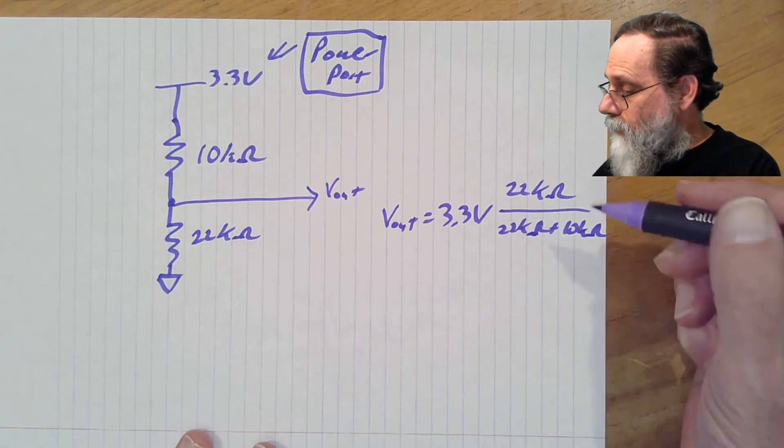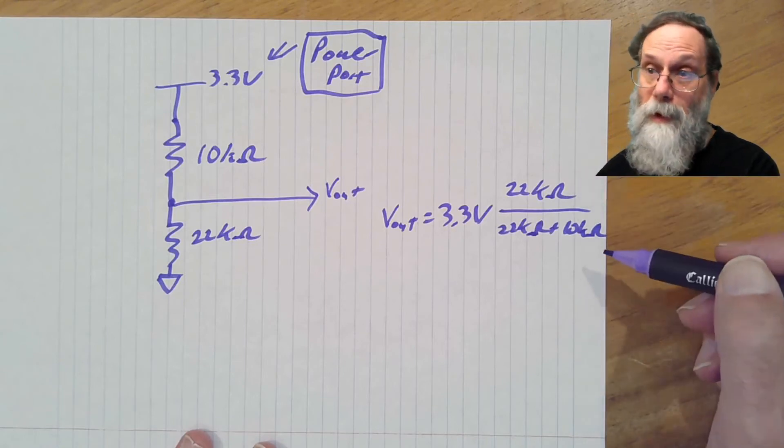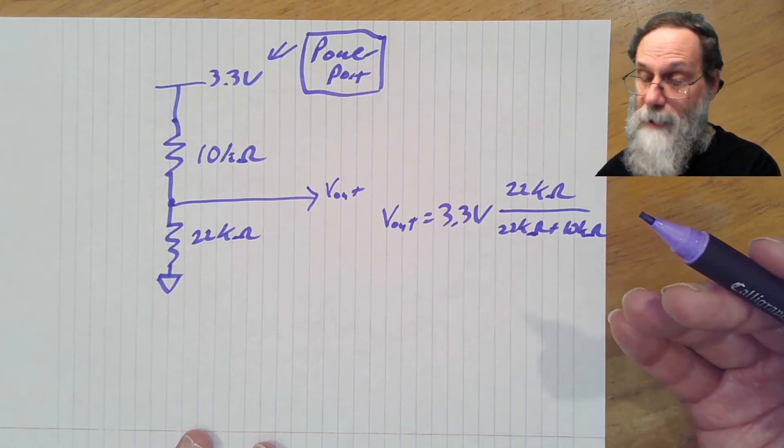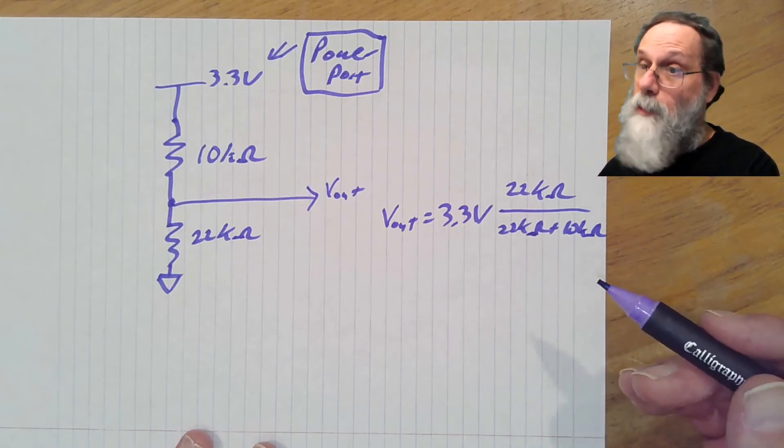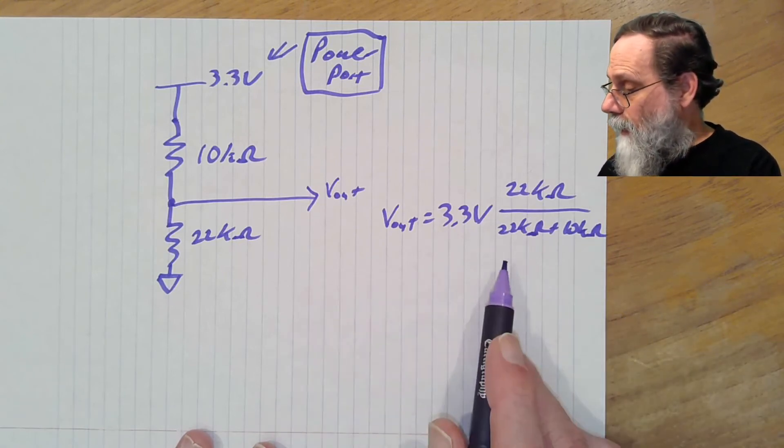And notice here, all the kilo ohms will cancel because the kilo ohms on top, the kilo ohms on the bottom are the same. If one was ohms and one was kilo ohms, we'd have a factor of a thousand to have to worry about. All right, so what do we have?